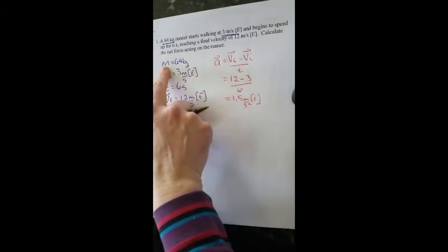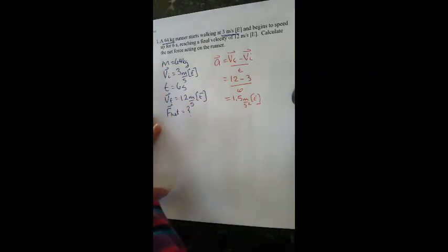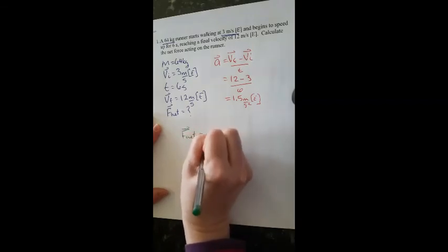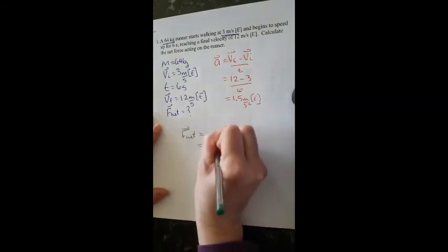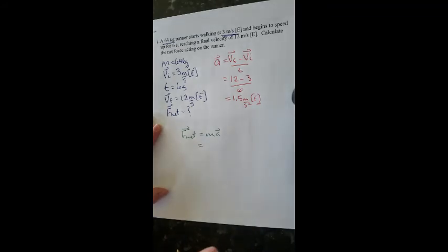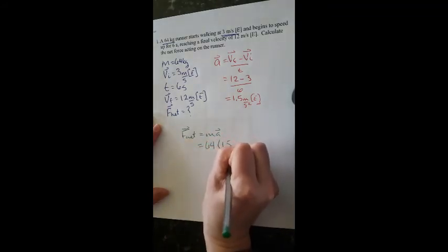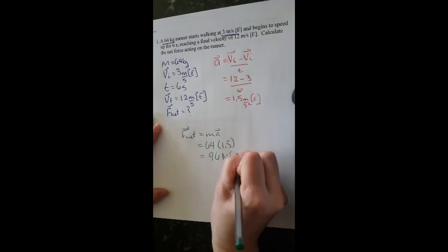Now I have A, I have M, I can use one of those F net formulas. I can use F net equals MA. Mass, I know, is 64 kilograms. A is 1.5. I plug in my calculator, I get 96 newtons in the east direction.